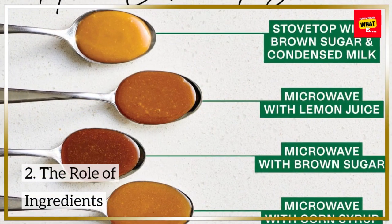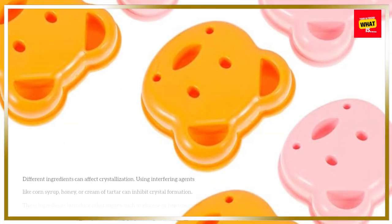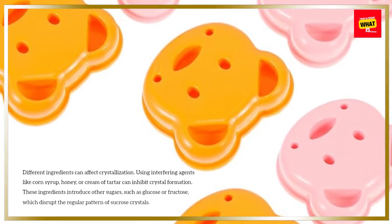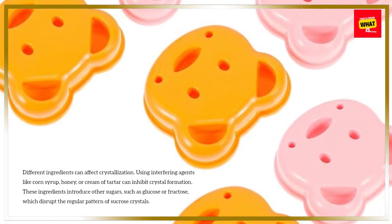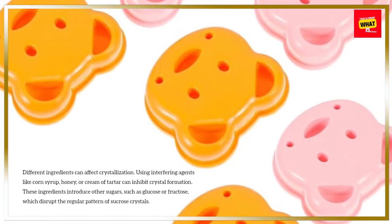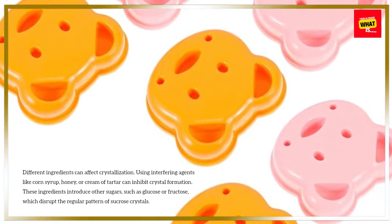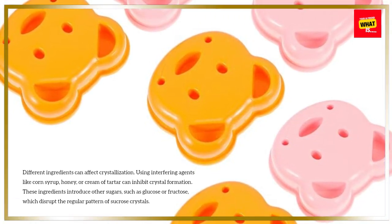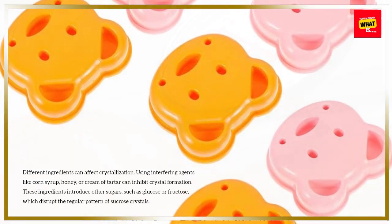The Role of Ingredients: Different ingredients can affect crystallization. Using interfering agents like corn syrup, honey, or cream of tartar can inhibit crystal formation. These ingredients introduce other sugars, such as glucose or fructose, which disrupt the regular pattern of sucrose crystals.